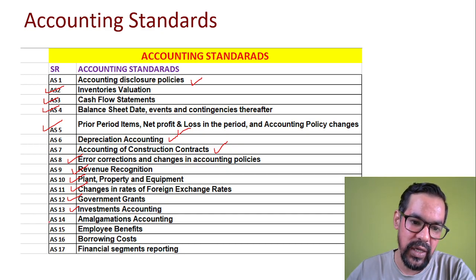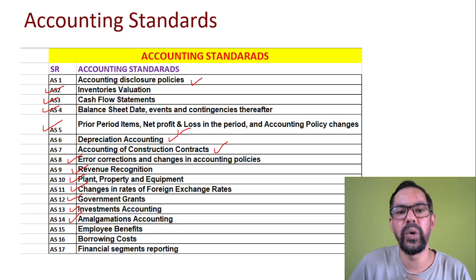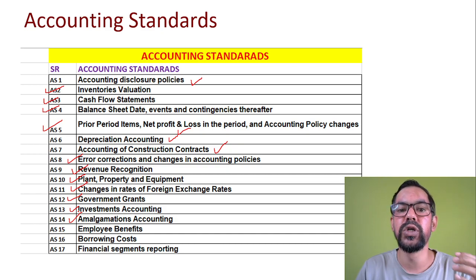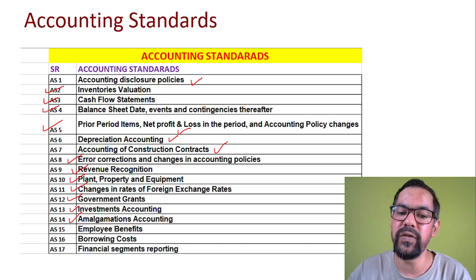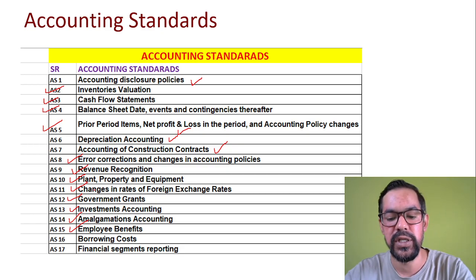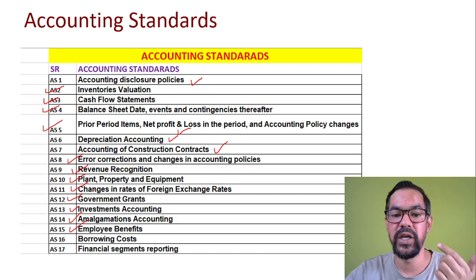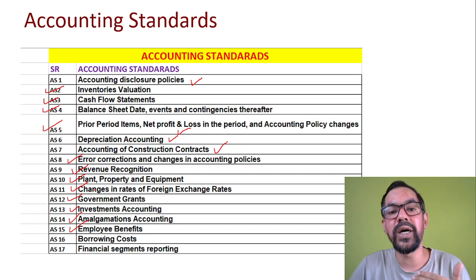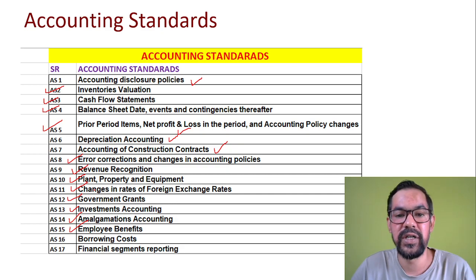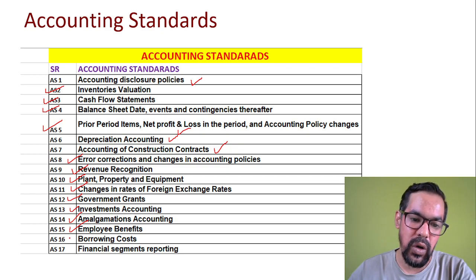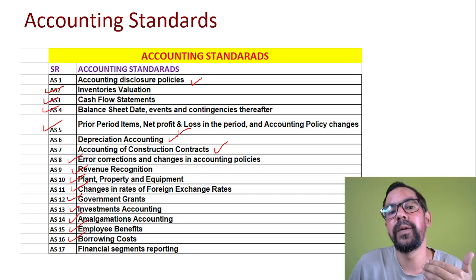Accounting Standard 14 covers Amalgamation — which refers to mergers. If a company merges with another company or acquires subsidiaries, they have to disclose that under amalgamation accounting. Accounting Standard 15 covers Employee Benefits. There are many employee benefits provided by companies nowadays — such as provident fund (PF), pension facilities, gratuity, leave encashment, and post-retirement welfare. What benefits you provide to employees and the methods by which retirement benefits are valued fall under Accounting Standard 15.